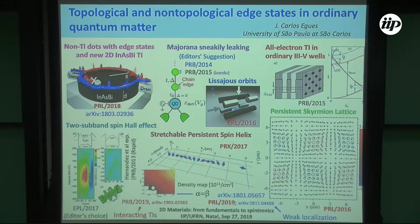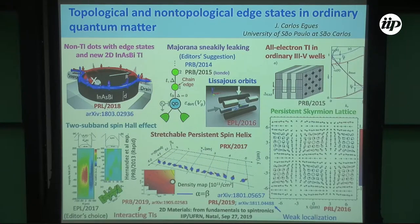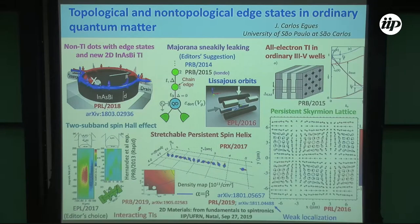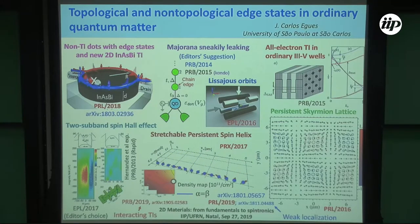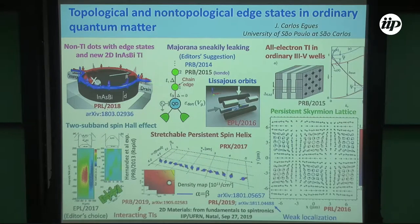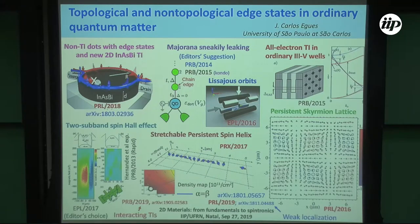We are able to show that you can tune alpha, the Rashba interaction, to equal strength with the Dresselhaus. We do this not only at a single point, but rather over a wide range of densities. So you're varying the density and can still keep this coupling tuned to each other, so that you can actually devise a persistent spin helix with variable pitch. Alpha and beta essentially define the pitch of this helix.